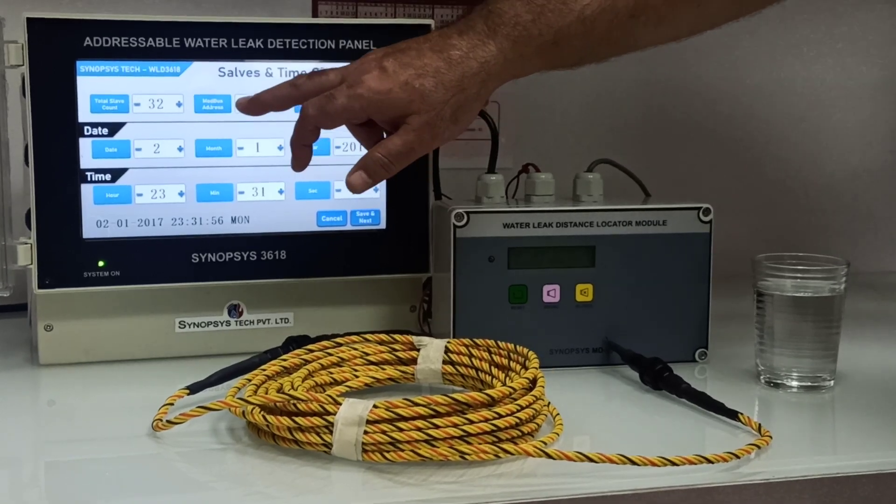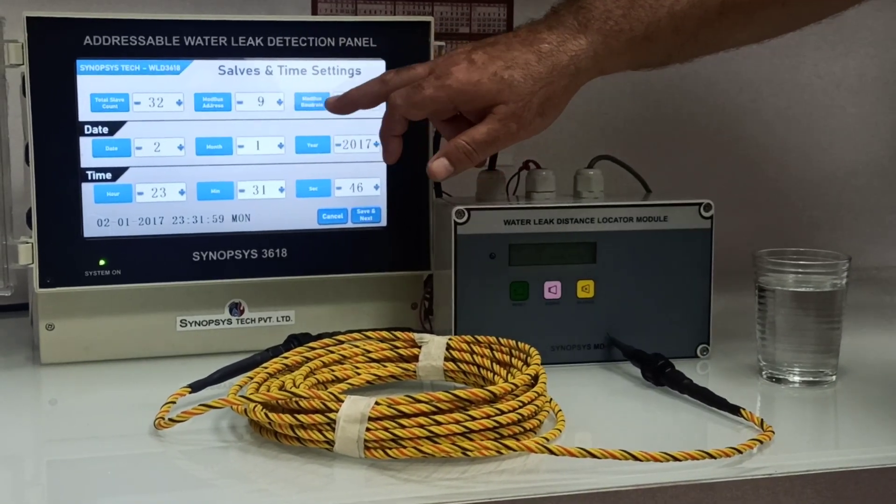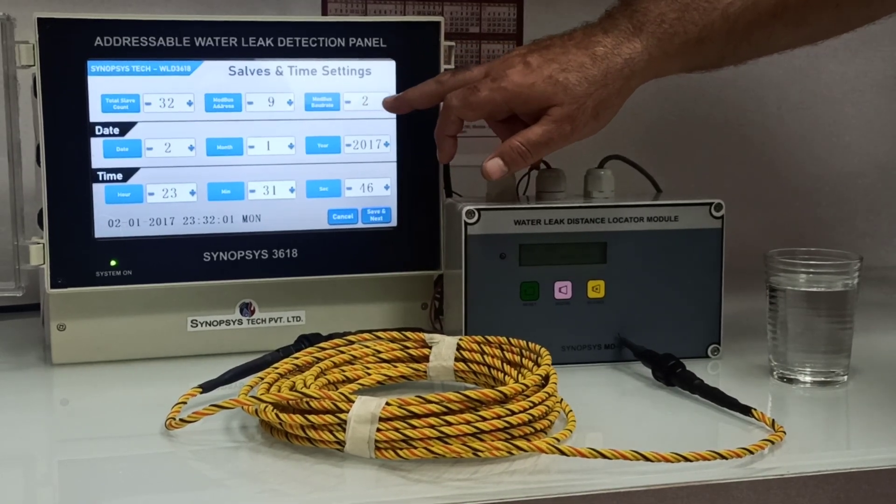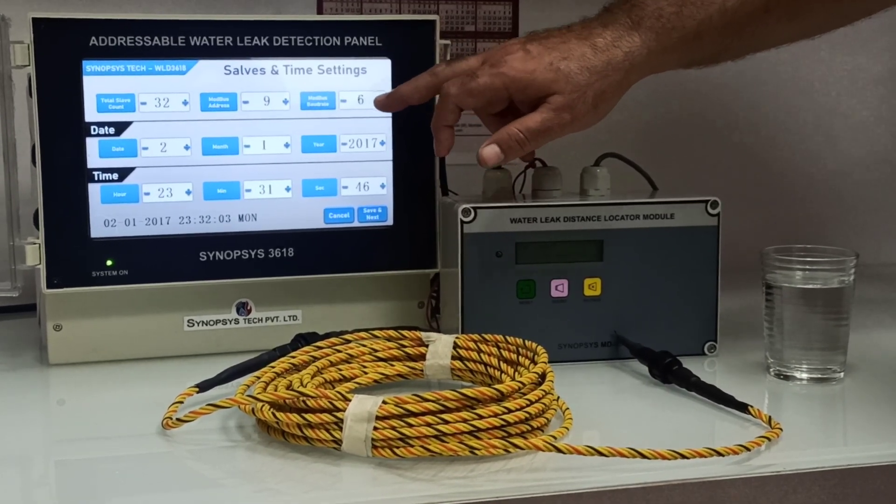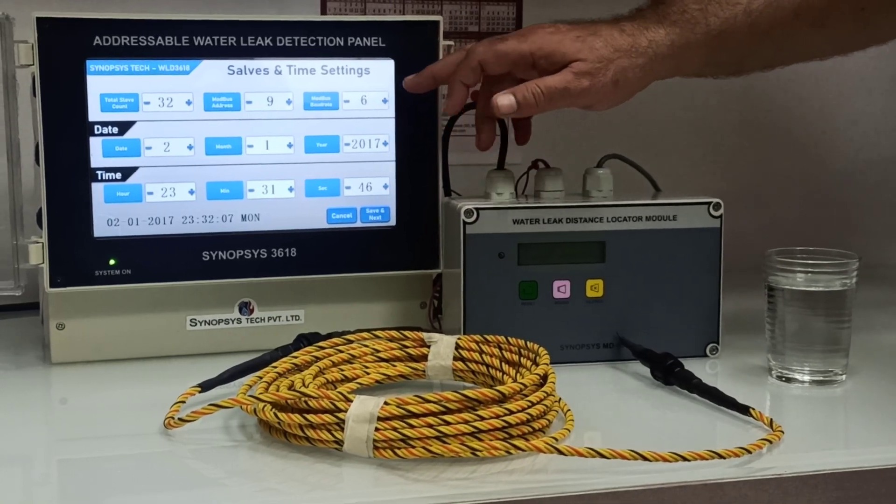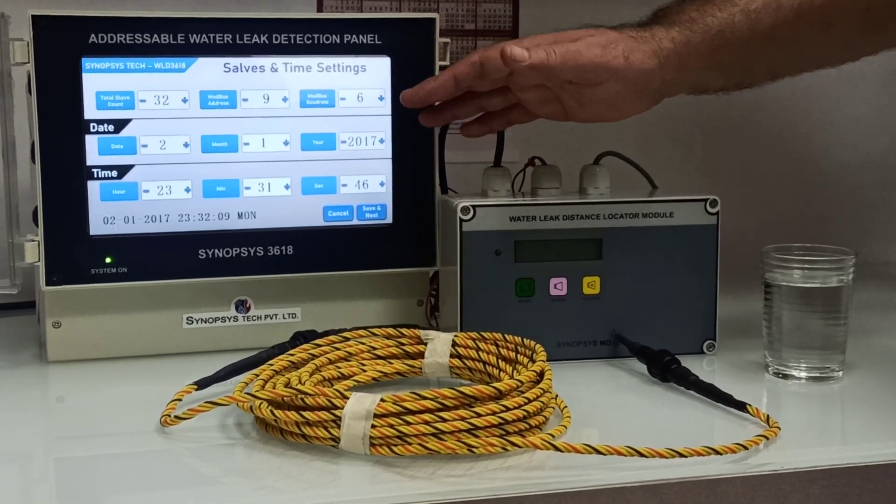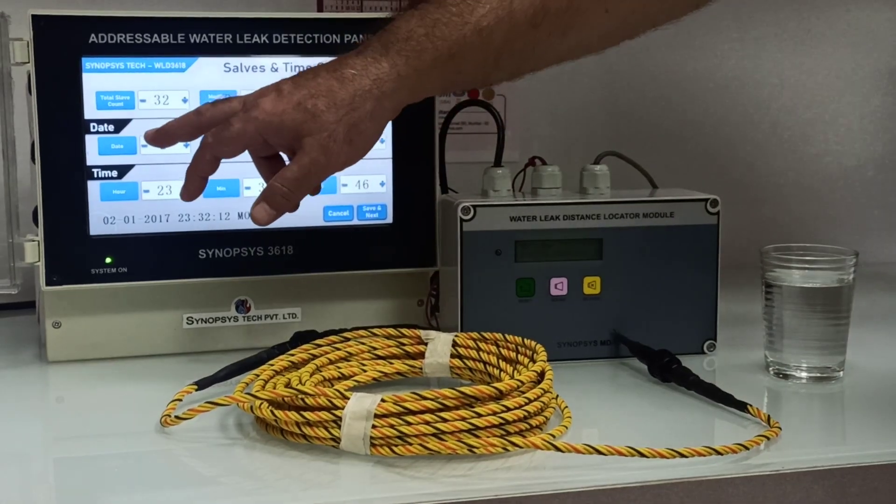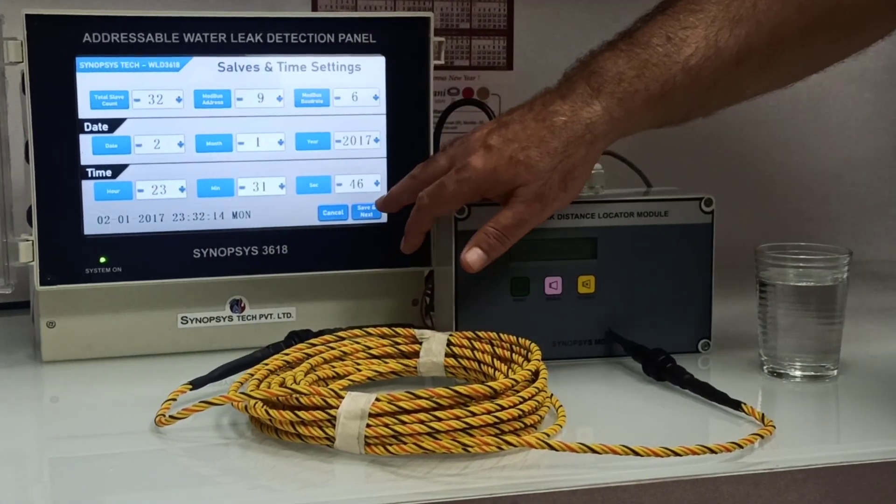Then we have Modbus address which you can change, then we have Modbus baud rate. This is a feature which normally others don't have - we can have six types of baud rates. According to the BMS system we can change the baud rates. We have date and time which can be changed.